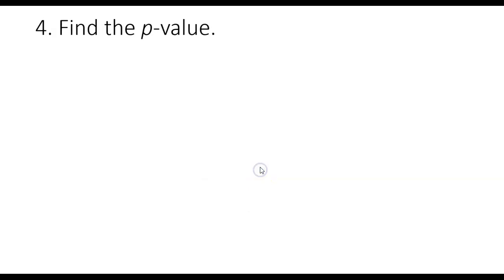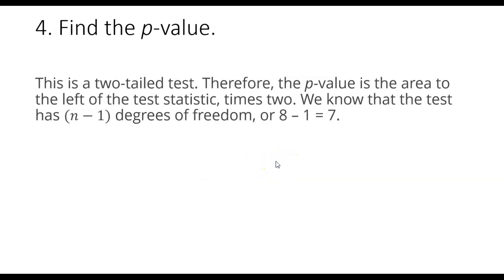Great! Now let's move forward, and we're going to use that test statistic to find our p-value. So this is a two-tailed test, as we know. Therefore, the p-value is the area to the left of the test statistic times two, because it's going to be symmetrical in each tail. Now we also, because we are dealing with the t-distribution, must have degrees of freedom.